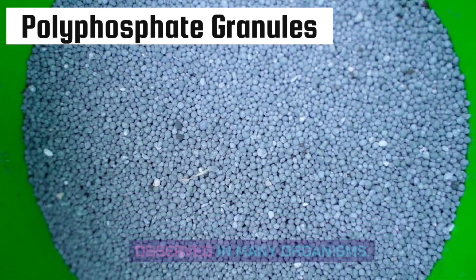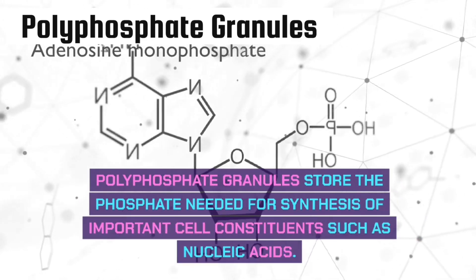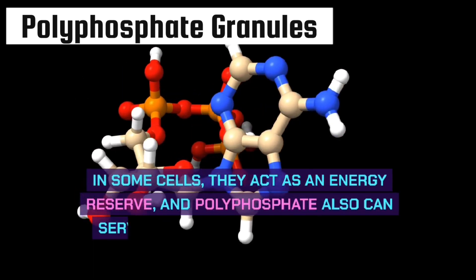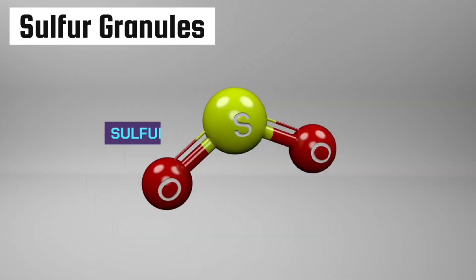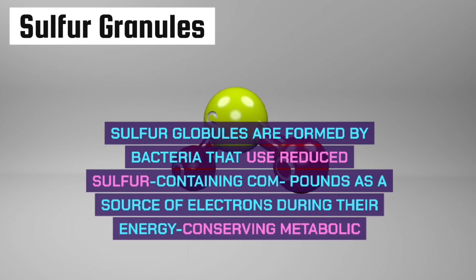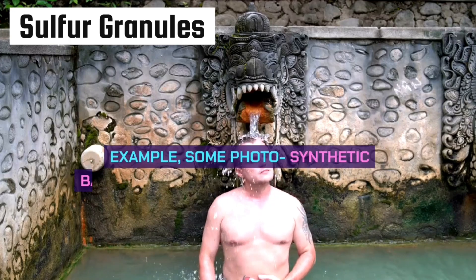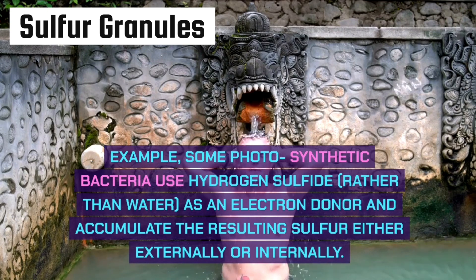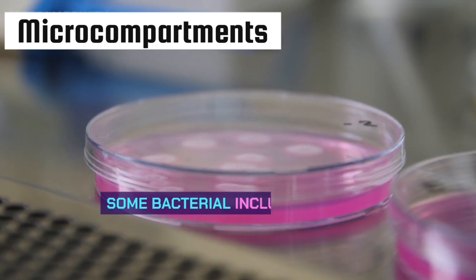Polyphosphate granules store the phosphate needed for synthesis of important cell constituents such as nucleic acids. In some cells they act as an energy reserve, and polyphosphate also conserves energy in some reactions. Sulfur globules are formed by bacteria that use reduced sulfur-containing compounds as a source of electrons during energy-conserving metabolic processes. For example, photosynthetic bacteria use hydrogen sulfide rather than water as an electron donor, accumulating the resulting sulfur either externally or internally for future use.